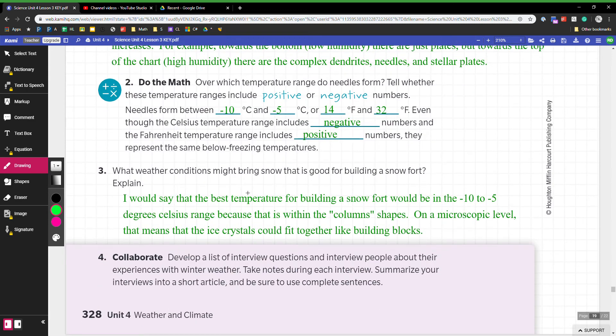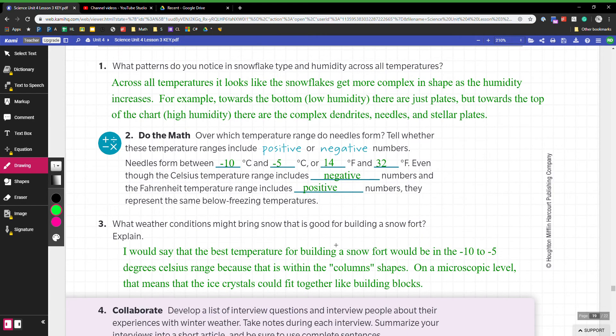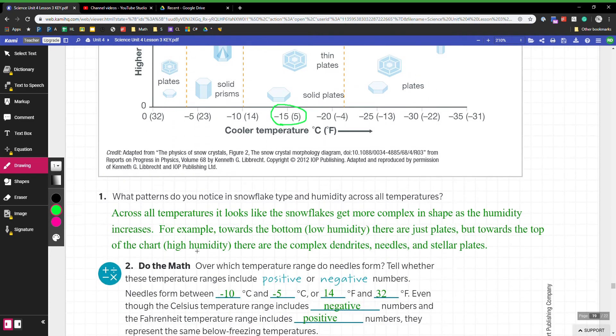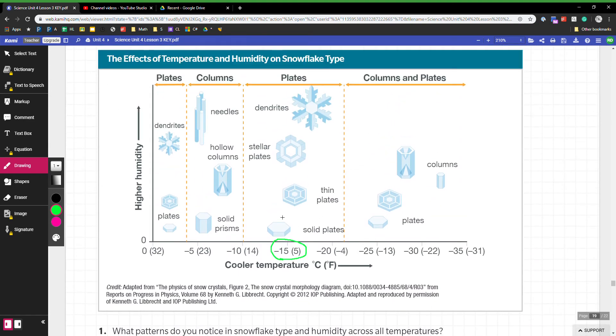What weather conditions might bring snow that's good for building a snow fort? I didn't actually look this up, so I could be totally wrong. You can look this up and argue about it more if you want. But just looking at this, I wanted to answer it like you might. What I looked at is I'm thinking it seems like these shapes would be good for having snow that builds something, either these shapes or maybe even these shapes.